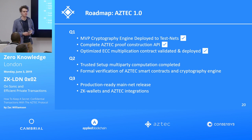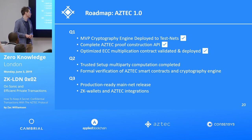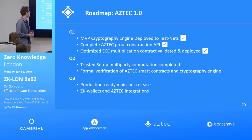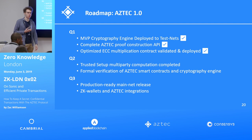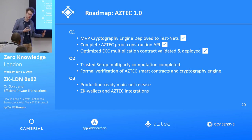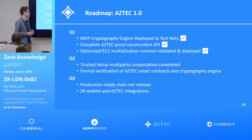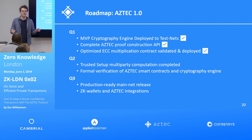This is our roadmap. We're happy to put ticks next to our Q1 milestones given that it's Q2. We're planning on starting and finishing our trusted setup multi-party computation in Q2, putting the finishing touches to our algorithms this week. We also want to begin to formally verify the critical sections of the AZTEC smart contracts — the verification smart contracts and the logic they contain — because while the ZK proofs themselves are sound and honest-verifier zero-knowledge, we want to validate that the code is an accurate expression of the mathematics. In Q3, we'll be gearing up for our production-grade mainnet release — taking this off the testnets and putting our stamp of approval that it's ready for a production environment.